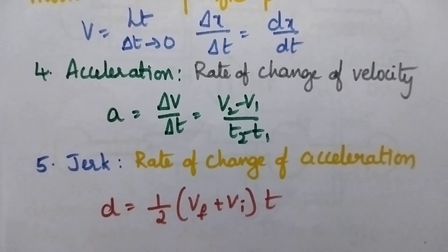Coming to the jerk, jerk is nothing but rate of change of acceleration. In other words, it can be called as displacement. So, d is equal to half final velocity plus initial velocity into time.